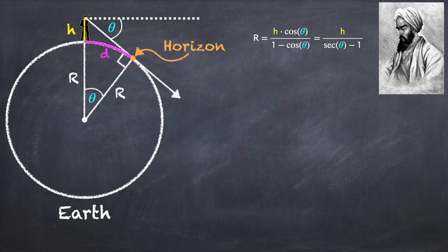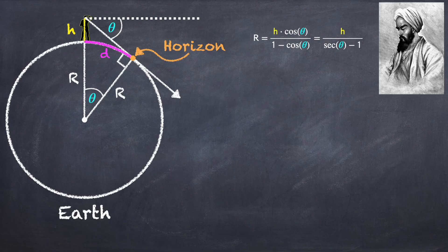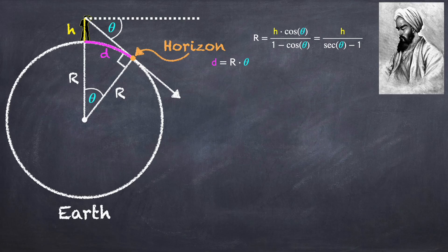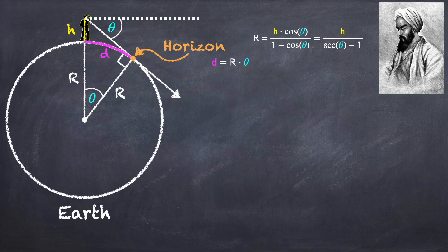Since the distance to the horizon d is just an arc length, by the definition of an angle, we have that this distance is the radius of the Earth times theta. But as I said, theta is very difficult to measure if h is only the height of a person. So we have to figure out what theta is.